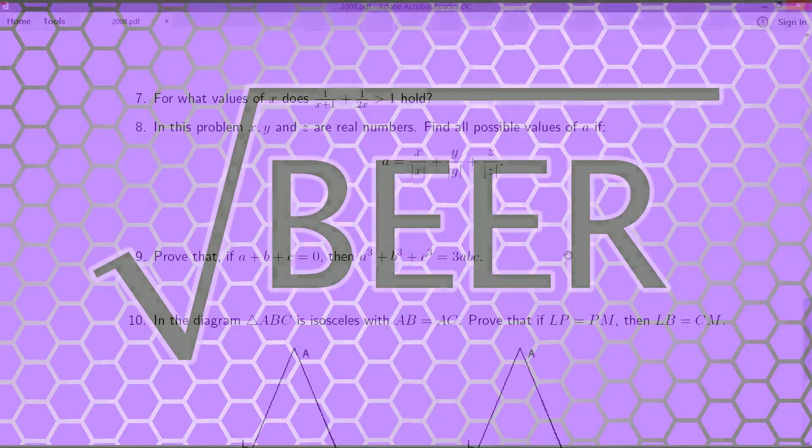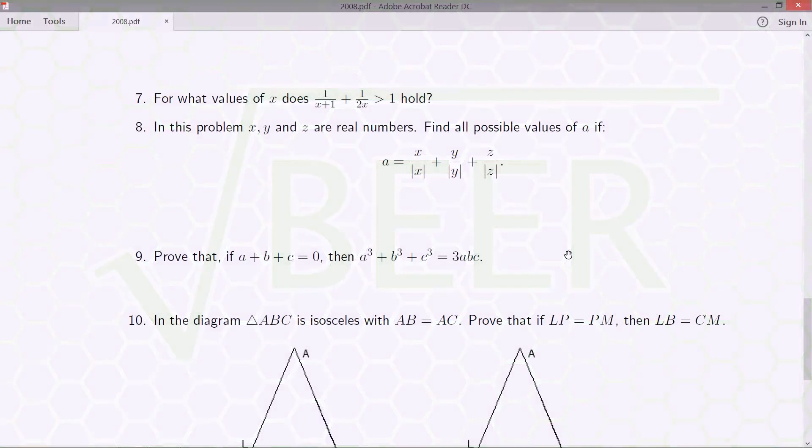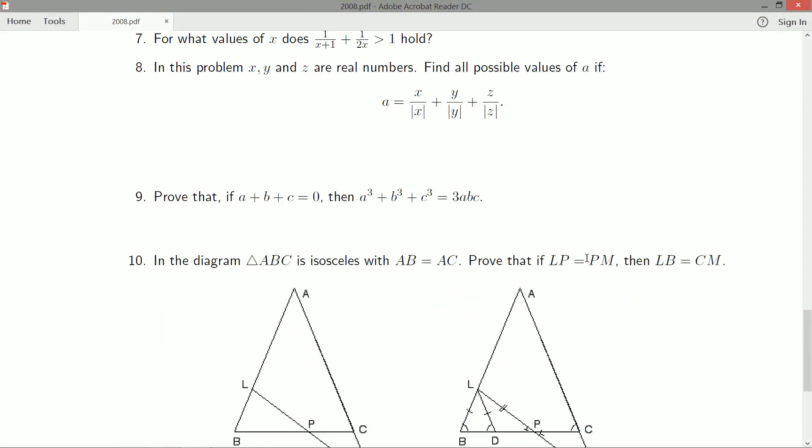Hello, hello, hello everybody. Thanks for joining me once again. We're looking at question number 9 now on the 2008 Manitoba Math Contest. Prove that if a plus b plus c is equal to 0, then a cubed plus b cubed plus c cubed is equal to 3abc.